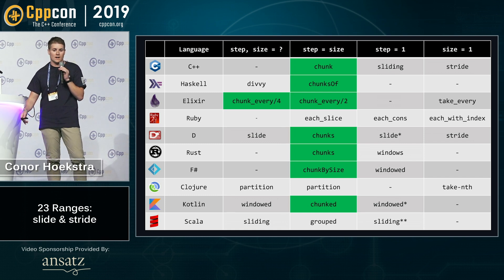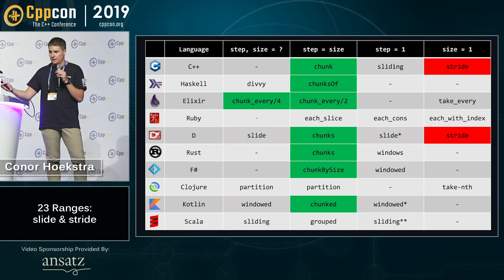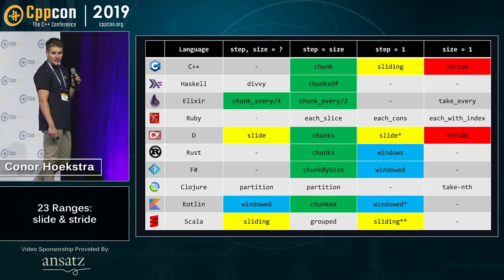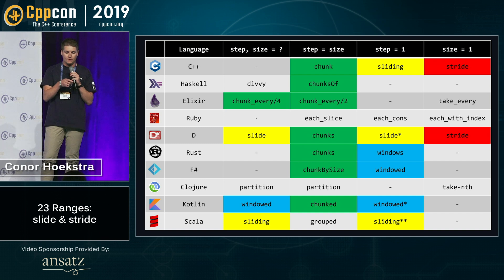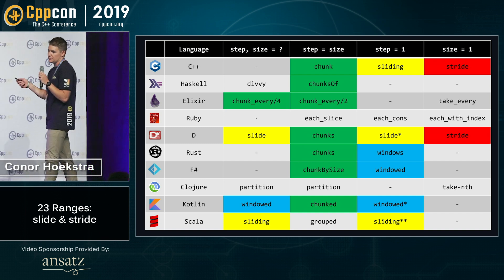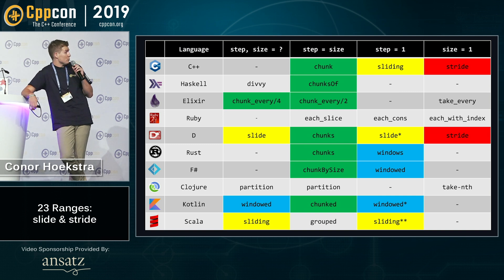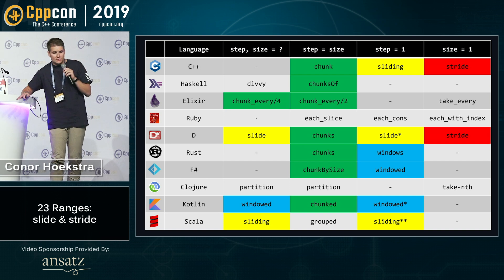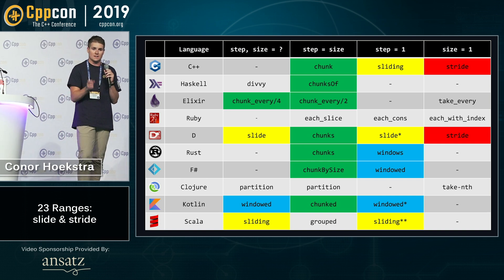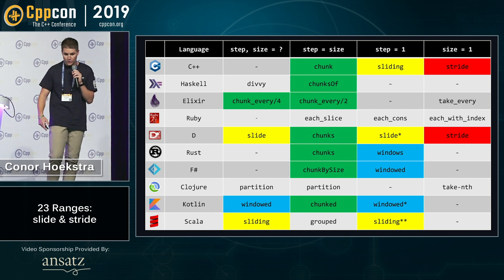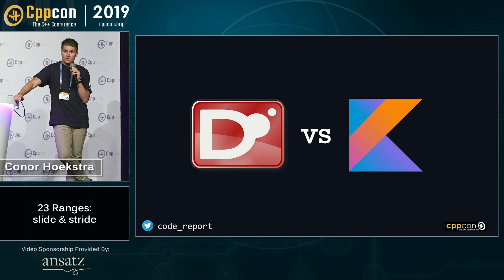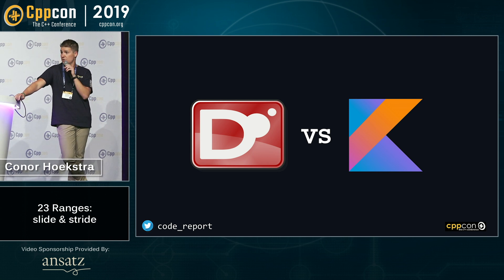The next most consistently named algorithm is stride, where size is equal to one — consistent with D. Two other names for this are take-nth from Clojure and take-every from Elixir. But for the cases where step equals one or where we have a full specification of step and size, we have ambiguity: either sliding or windows. If we're consistent with Scala, D, and range-v3, we get sliding or slide; if we're consistent with Kotlin or F# or Rust, we call it window or windows. Note that Rust and F# don't have the two-integer parameter version — they only have the sliding where step is hard-coded to one. The question is: should we be consistent with D or with Kotlin?